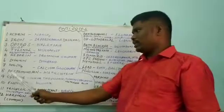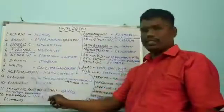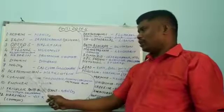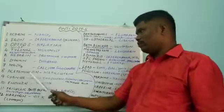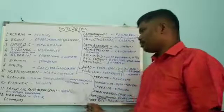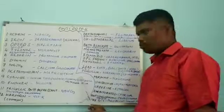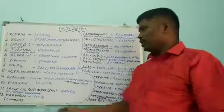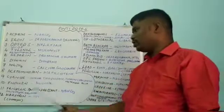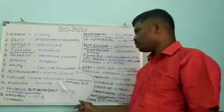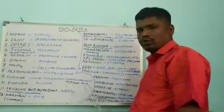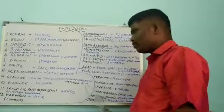Next one is acetaminophen, which is nothing but paracetamol. In paracetamol or acetaminophen overdose, acetylcysteine or Mucomyst is used as an antidote. Next one is cyanide poisoning. In cyanide poisoning, sodium thiosulfate, hydroxocobalamin, or methylene blue is used as an antidote.